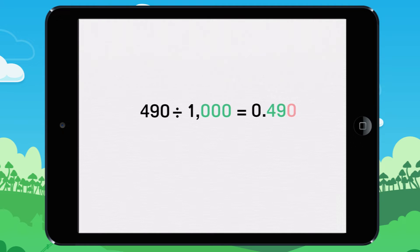Now you don't really need this extra zero. You can take it off. 490 divided by 1,000 equals 0.49.